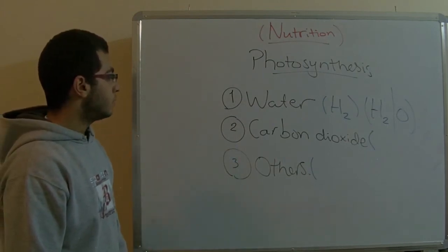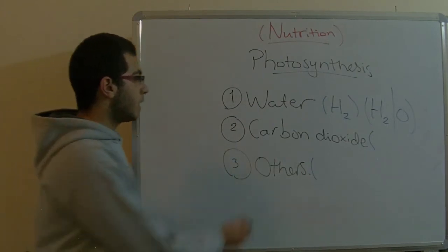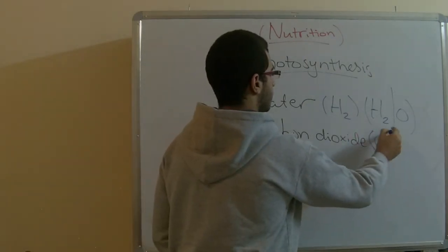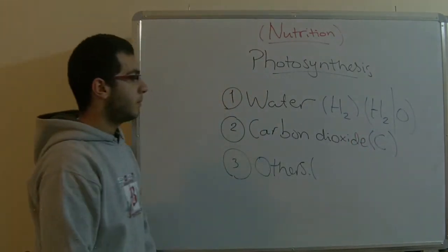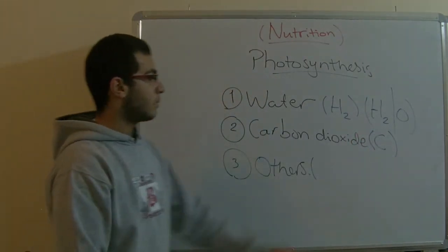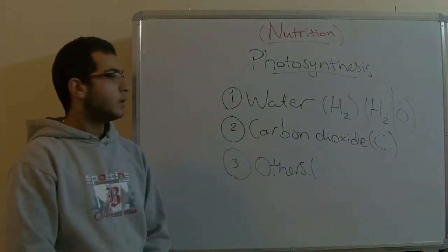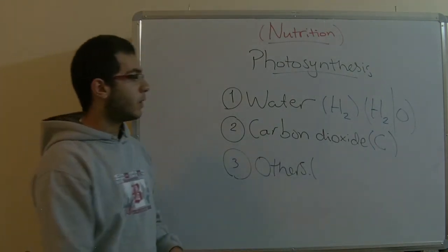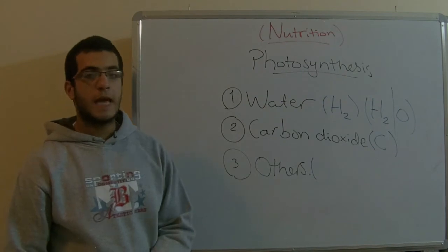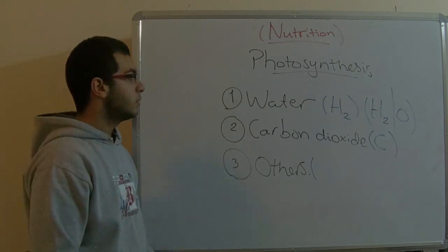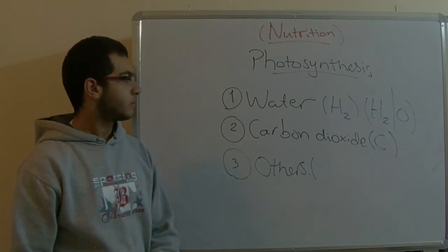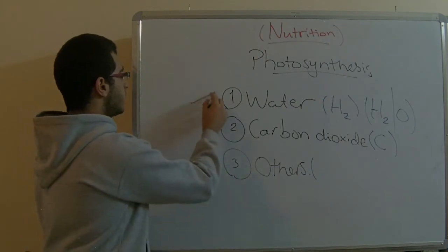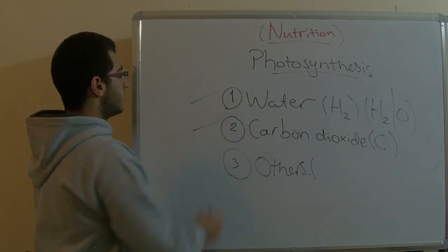Carbon dioxide is the only source of carbon for the plant. So the plant uses both carbon and hydrogen to form carbohydrates. Those are the two main requirements we have talked about.